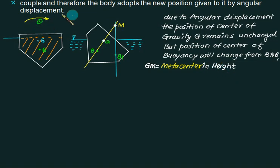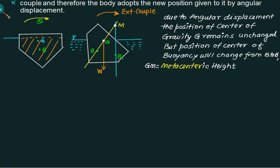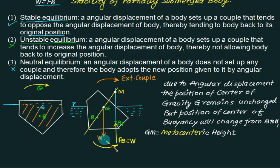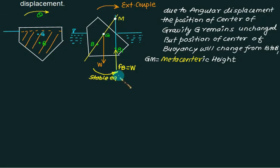When angular displacement is applied clockwise, the weight acts vertically downward and the buoyant force acts upward through the new center of buoyancy B1. Since W equals FB in floating condition, these two equal parallel forces produce an anticlockwise couple, which cancels the external couple — so the body returns to its original position. This is stable equilibrium: metacenter M lies above G, and GM is positive.